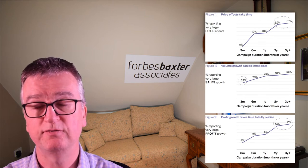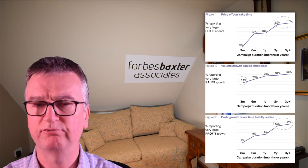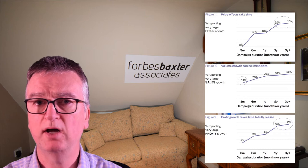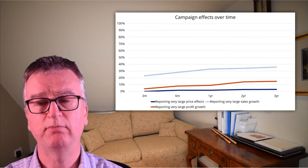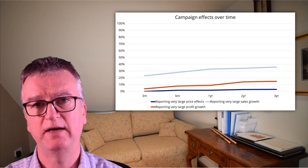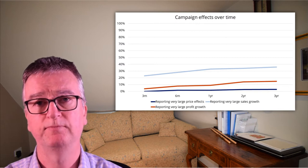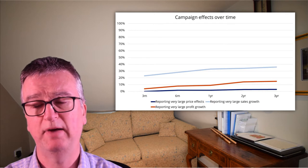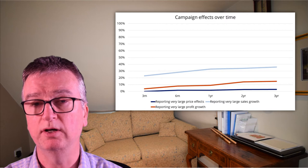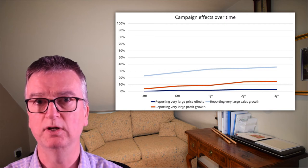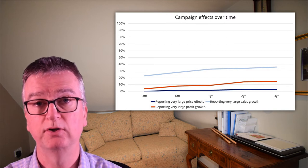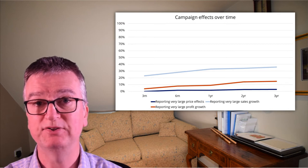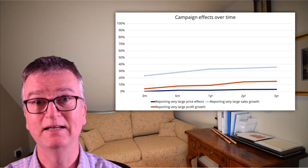It's hard to agree with the conclusion on price effects that they're still rising strongly after three years. They went from 2.9% to 3.1% between years two and three — that's about as strong as a wet tissue. If you wanted a campaign that was going to have a very large effect on price, would you adopt a campaign that after three years only worked 3% of the time? That means it didn't work 97% of the time. Or if you wanted a campaign with a strong effect on profit, would you choose a technique that only worked 15% of the time after three years — i.e., 85% of the time it didn't work?